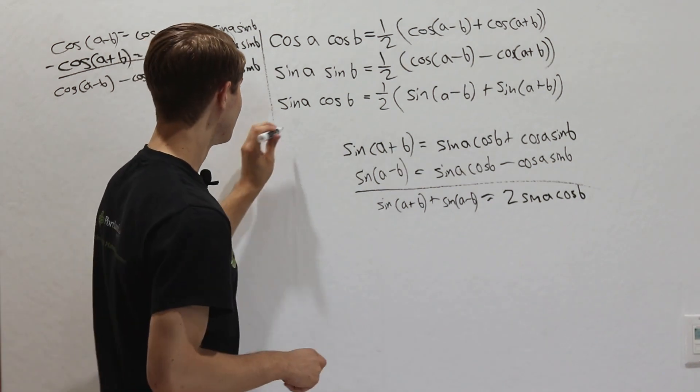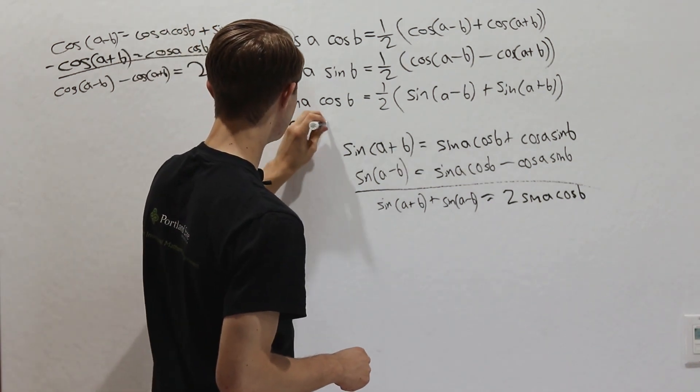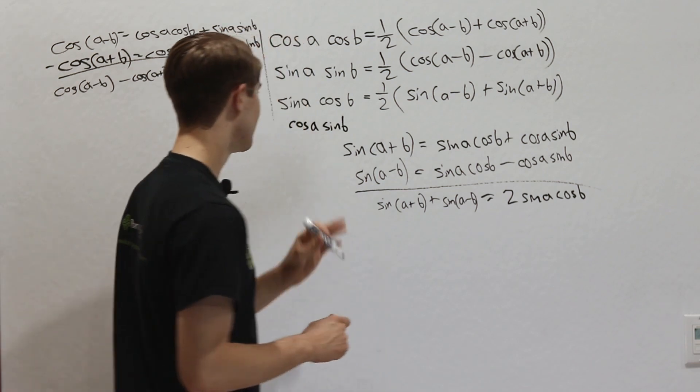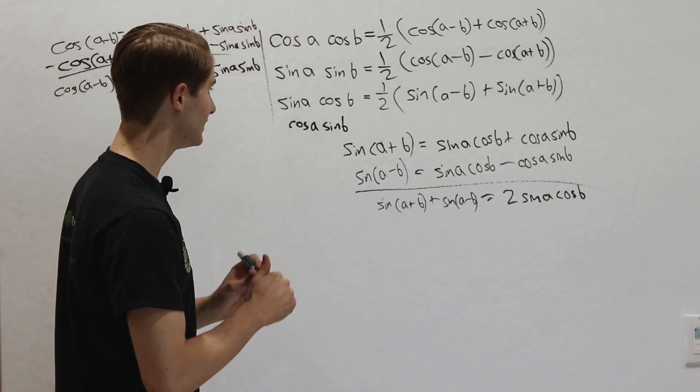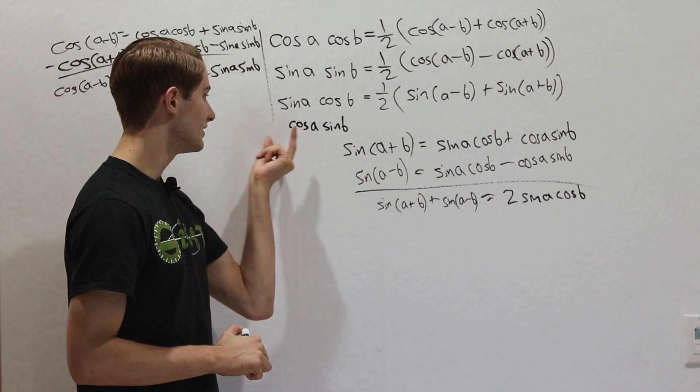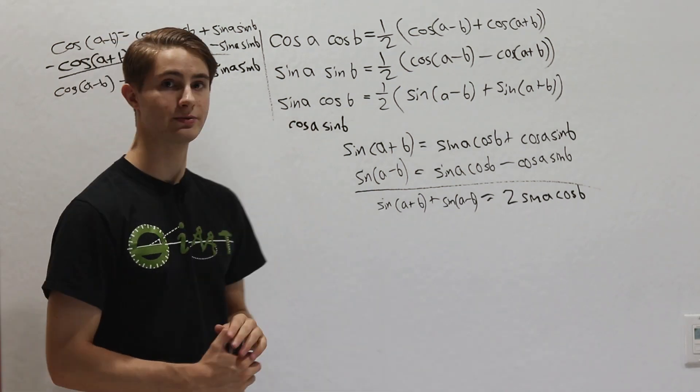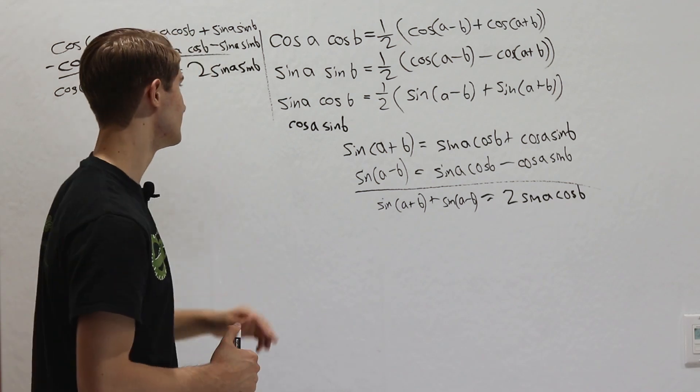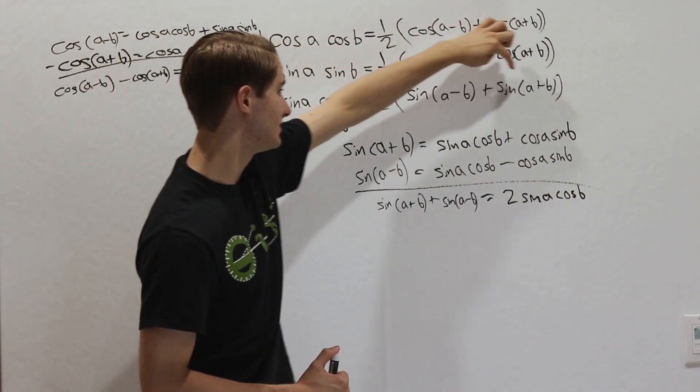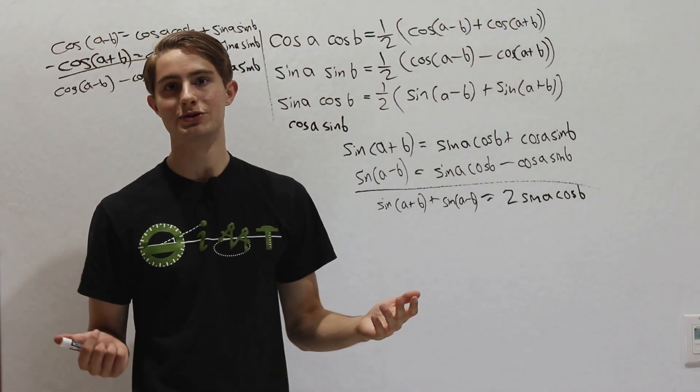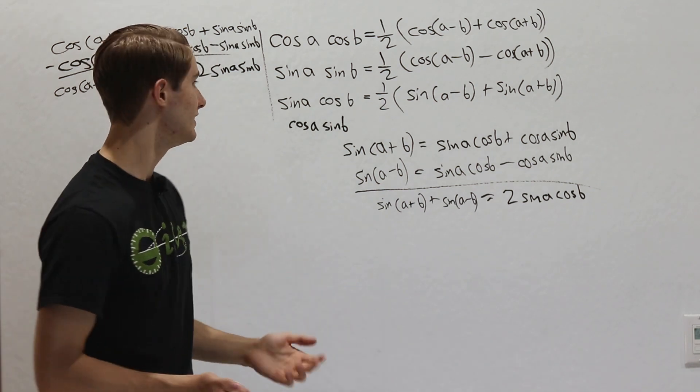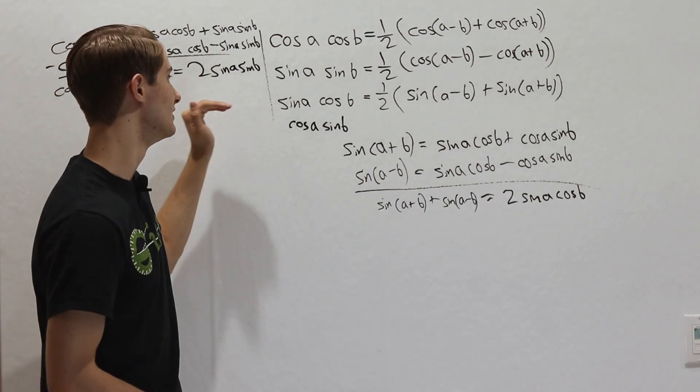Now some people might be asking, what happened to cosine a sine b? Isn't that the fourth thing that we should have on our list right here? And the answer is, if you find an expression in this form, all you have to do is flip these two terms around, because multiplication is commutative, and then you can just apply this same identity right here. There's no reason to add in a new identity if we already have the information we need right here.